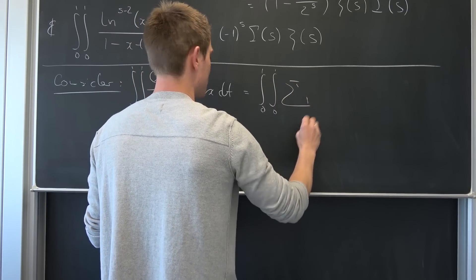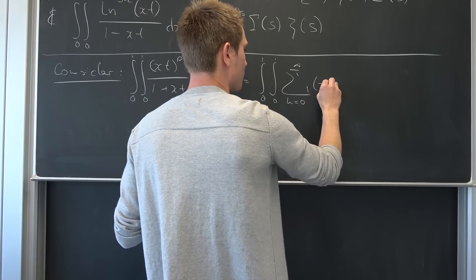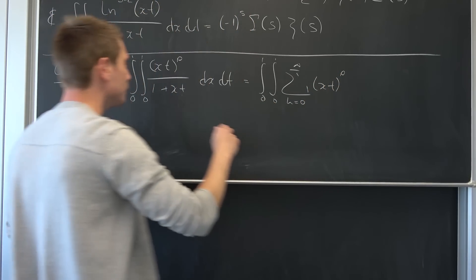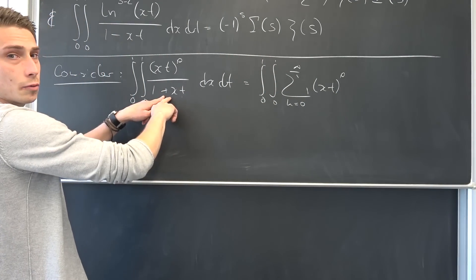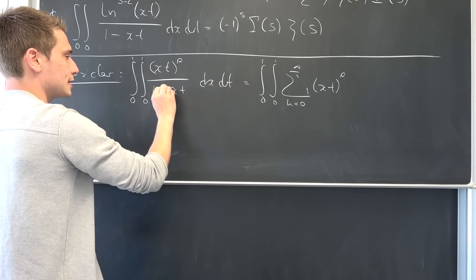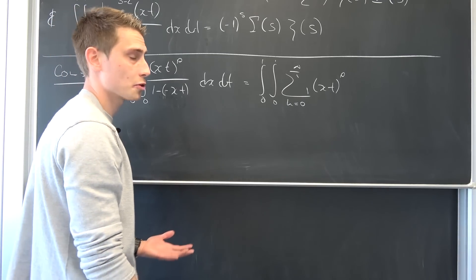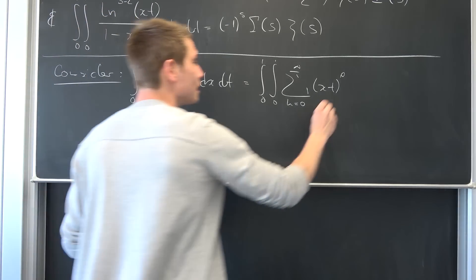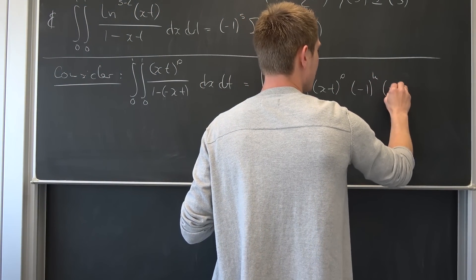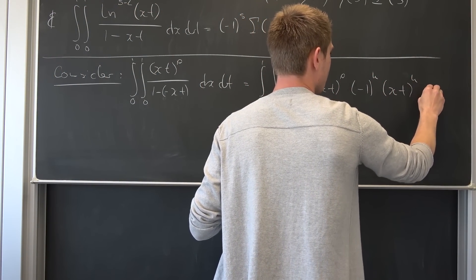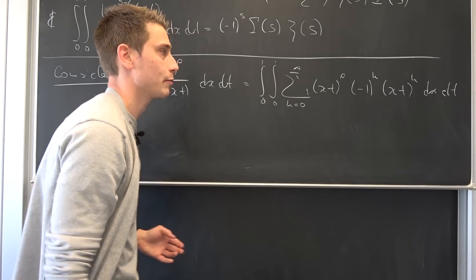On this interval both variables converge, so we can just use a single geometric sum basically — call x times t equal to u and then we are fine. So this thing right here is nothing but a sum from 0 to infinity of x times t to the p-th power, and then the geometric series tells us we are going to get negative 1 to the k-th power and x times t to the k-th power, integrated with respect to x and then with respect to t.